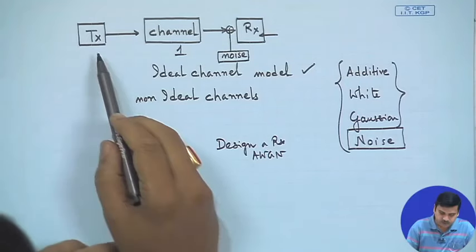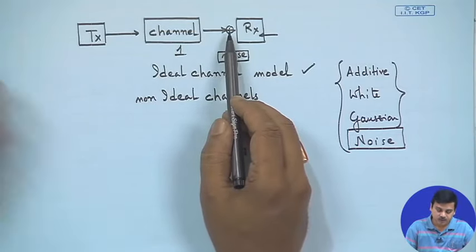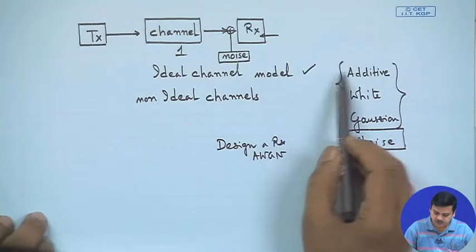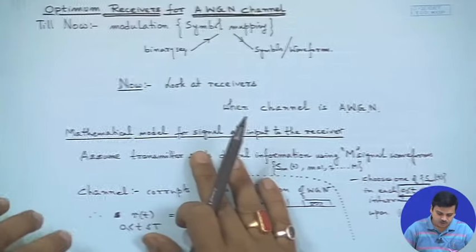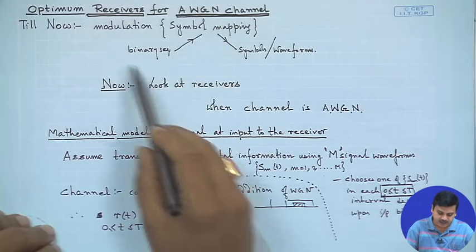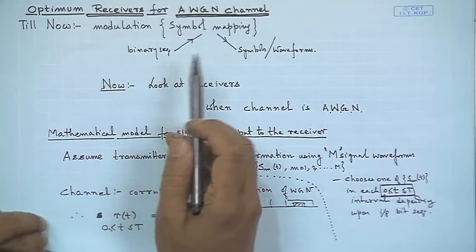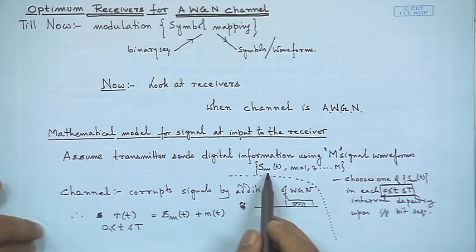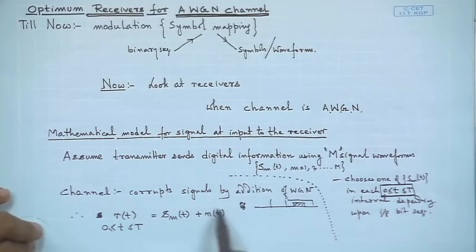We provided a model where there is a transmitter, channel, and receiver, and noise gets added at the receiver. We also said we will take a look at the ideal channel where channel gain is 1, effectively known as the additive white Gaussian noise channel, and we want to design a receiver for it. We looked at the received signal R(t) = S_m(t) + noise, where S_m is the transmitted signal, m ranging from 1 to M, selecting one of the possible waveforms.